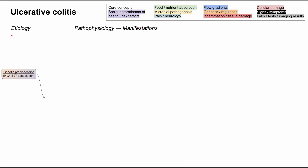First, let's talk about the etiology of ulcerative colitis. You can have a genetic predisposition to UC. The actual genes and sequences aren't worth knowing, but it is worth knowing that there is an HLA-B27 association with ulcerative colitis. There's also a racial-ethnic component — white people and Ashkenazi Jewish people tend to have ulcerative colitis. In many cases, up to 20% of people with UC have a family history of the disease, further evidencing this genetic, hereditary, racial, and ethnic predisposition.